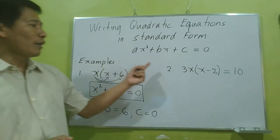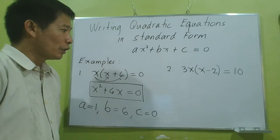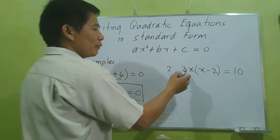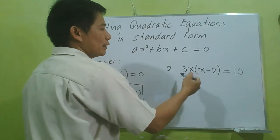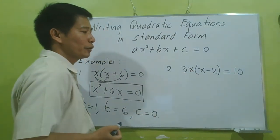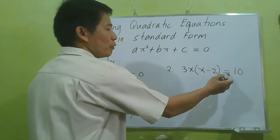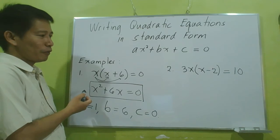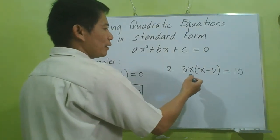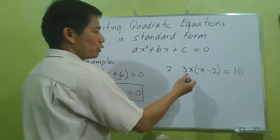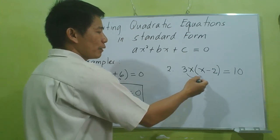Let's have our example number 2. In our number 2 example, we have the left side: 3x multiplied by (x - 2), and the right side is equal to 10. Just like what we did in example number 1, we will simplify the left side first by applying the distributive property.